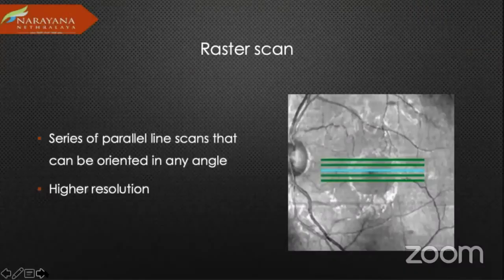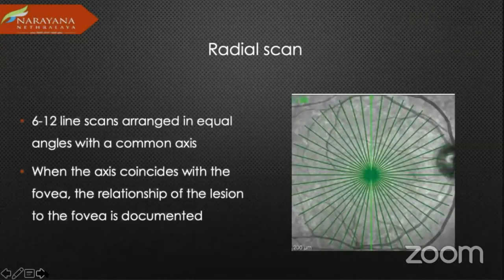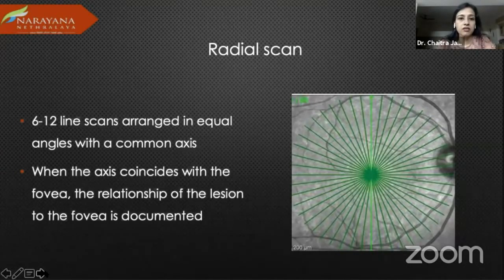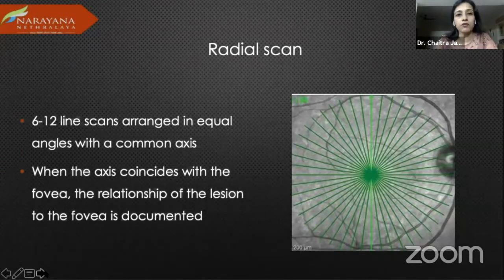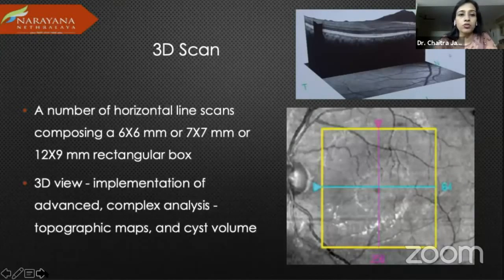You have a raster scan, which is a series of parallel line scans that can be oriented in any angle and gives very high resolution imaging of the pathology. The radial scan is used very often — it gives the relationship of the lesion with respect to the fovea, which is very important because foveal lesions cause more visual disturbance to the patient. We also get a 3D scan, which is especially important when looking at topographic maps and volume — there are different protocols for that.